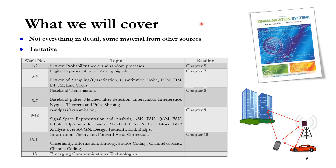What are we going to cover in this course? We have main modules. The first is a review of probability and random processes. We'll also review the digital representation of analog signals, like sampling, quantization, and PCM — to get you ready if you missed anything in previous courses. The next module is baseband transmission, covering baseband pulses, matched filter design, inter-symbol interference, and others.